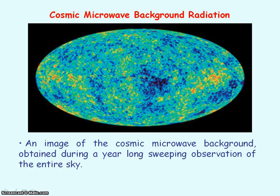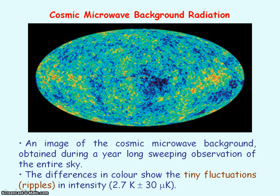So this is an image of the cosmic microwave background radiation obtained during a year long sweep of the sky. And the differences in colour show the tiny fluctuations which are known as ripples in intensity. The spectrum of the cosmic microwave background radiation has a characteristic temperature of 2.7 Kelvin. So this is the average temperature of the universe. And that's because the universe is mostly empty space. And the tiny fluctuations represents a difference in temperature of 30 microkelvins.